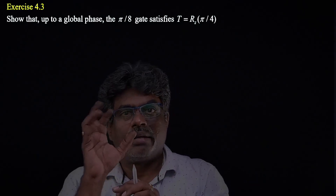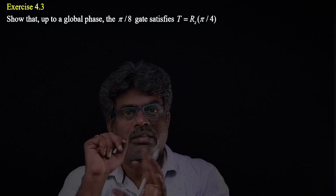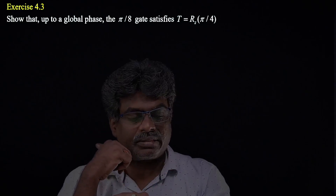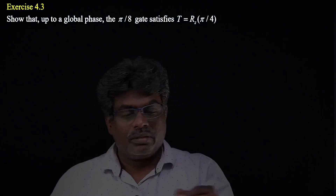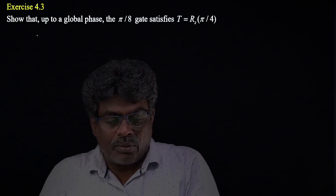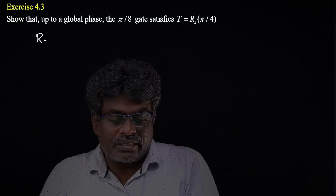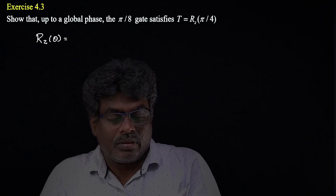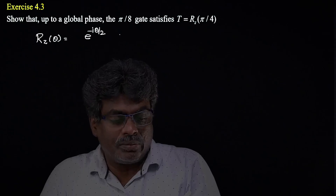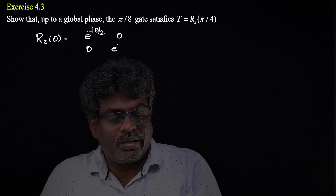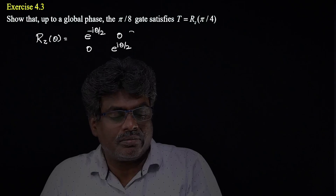This is the next question about the relation between the T gate and the rotation gate about the z-axis. First, let me take a rotation gate about the z-axis, that is Rz(θ), which is the matrix with e^(-iθ/2) and e^(iθ/2) on the diagonal.